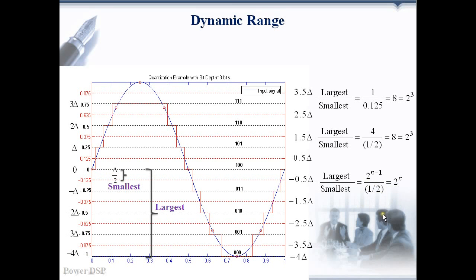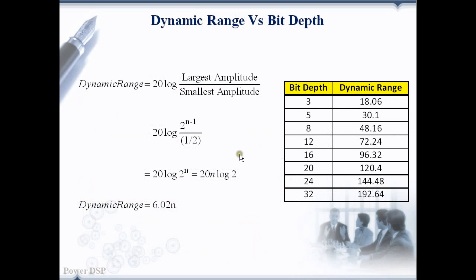Dividing these two, we get 2 power n. Here, we find out the dynamic range in dB. So 20 log 2 power n is equal to 20 n log 2. After substituting the value of log 2, we get dynamic range as 6.02 n.